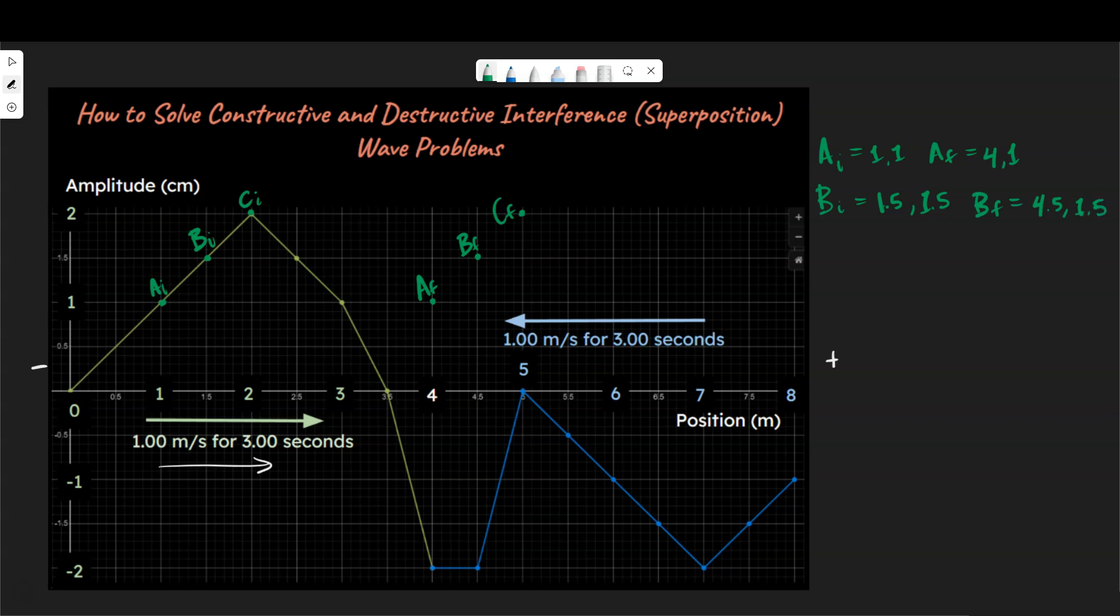Notice the amplitude, the y value, doesn't change initially just based on these green values. They're just shifting over. You can have the green wave be at the same place at the same time as the blue wave. We'll see that in just a minute. Let's talk about C. C initial coordinates are going to be (2,2), and C final coordinates are going to be (5,2).